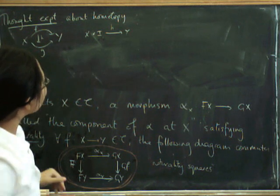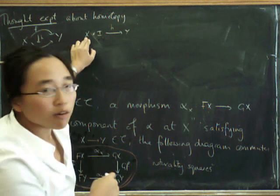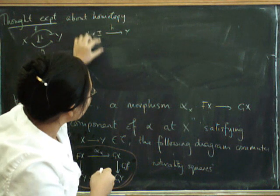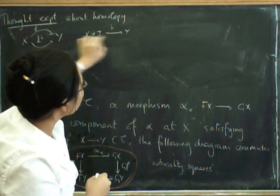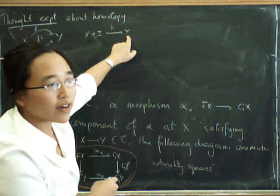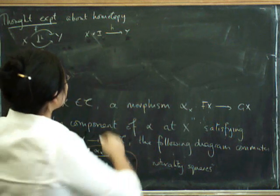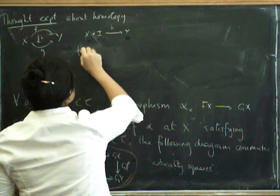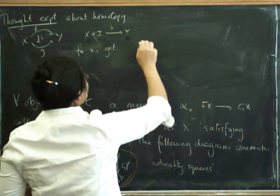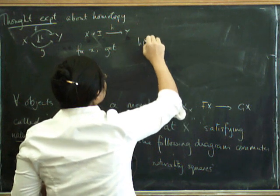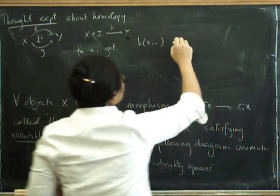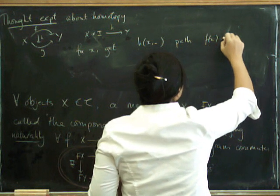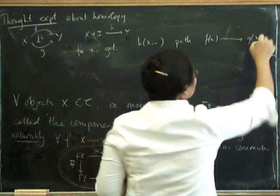But what that in particular gives you is that if you fix an object of x, then what you're going to get as you vary yourself along this i part is a path from f of x to g of x in y. So for all, what you get here is that if you fix x, we get h of x blank, which is a path from f of x to g of x.